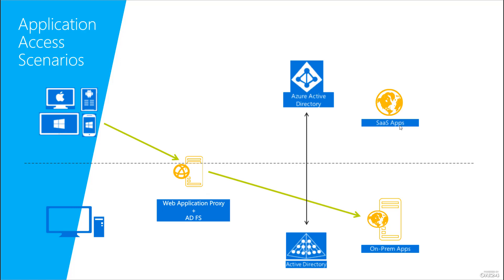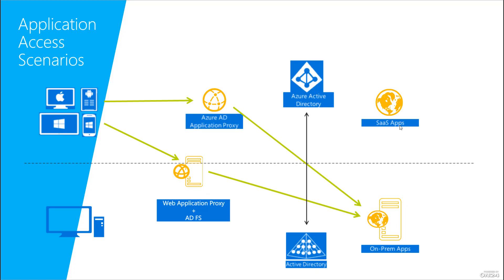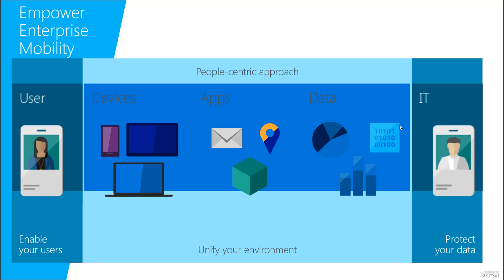Since we have an Azure Active Directory subscription — if you are an Office 365 customer, you already have one — we asked: is it possible to use Azure Active Directory to publish our application to the external world? Today we have the option to publish that application using the new service called Azure Active Directory Application Proxy. All these users will be able to connect to on-premises applications just by using a simple URL. You will be impressed at how easy it is to configure.